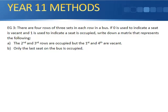Example three. There are four rows of three seats in each row on a bus. If zero is used to indicate a seat is vacant, and one is used to indicate a seat is occupied, write down a matrix that represents the following. So let's do part A. The second and third rows are occupied, but the first and fourth are vacant. So here we go.